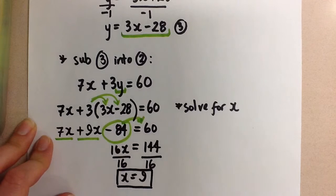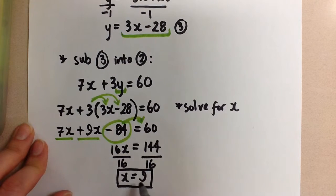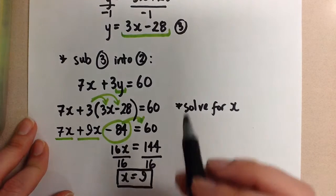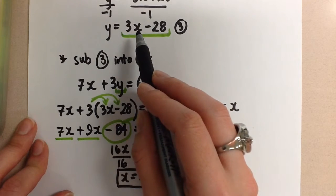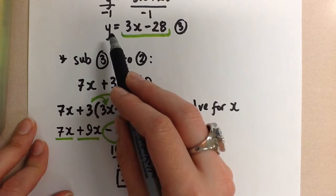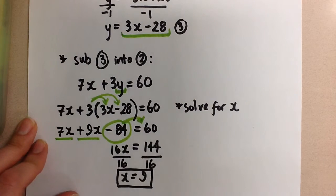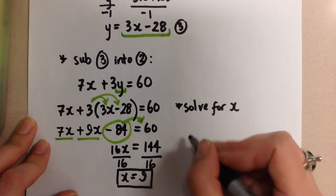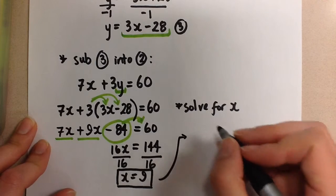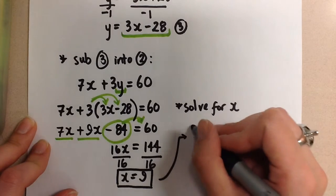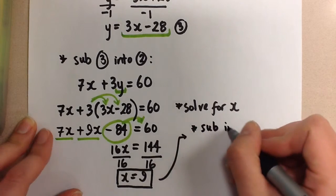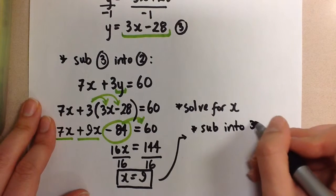So here we have one coordinate for our point of intersection, x equals 9. But we know that a point consists of an x and a y variable. So we're going to take this x, and we're going to sub it back into equation 3 so that we can get the y, the corresponding y value.